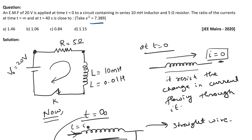Looking at the options, option C is 1.06, another option is less than 1 — we can neglect that. The first option is much greater than 1 with a large difference, so we neglect that too. Out of the remaining values, we choose the one that is just slightly greater than 1. So the correct answer is option B. I hope you were able to learn something from this video. If you liked the video, please come back. Thank you.